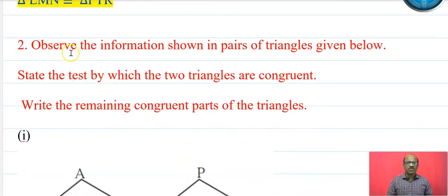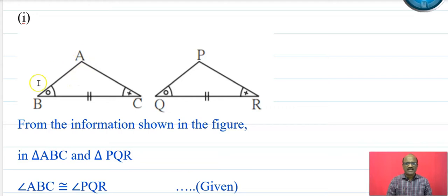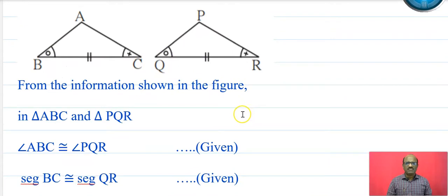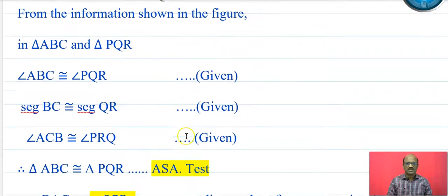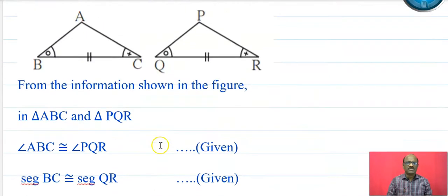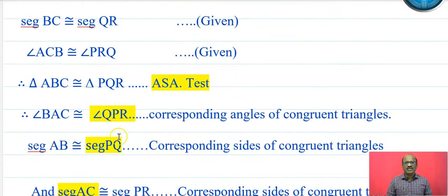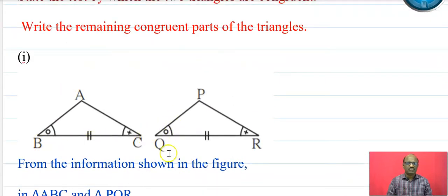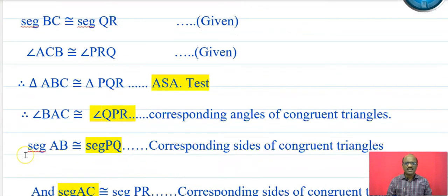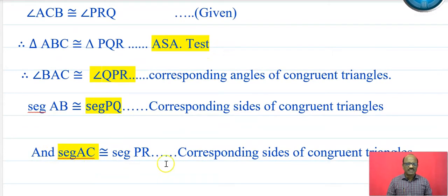Now question number 2: observe the information shown in pairs of triangles given below. State the test by which the two triangles are congruent, and write the remaining congruent parts. In triangle ABC and triangle PQR, angle ABC is congruent to angle PQR, segment BC is congruent to segment QR, and angle ACB is congruent to angle PRQ. Therefore triangle ABC is congruent to triangle PQR by the ASA test. The remaining parts are: angle BAC is congruent to angle QPR, segment AB is congruent to segment PQ, and segment AC is congruent to segment PR.